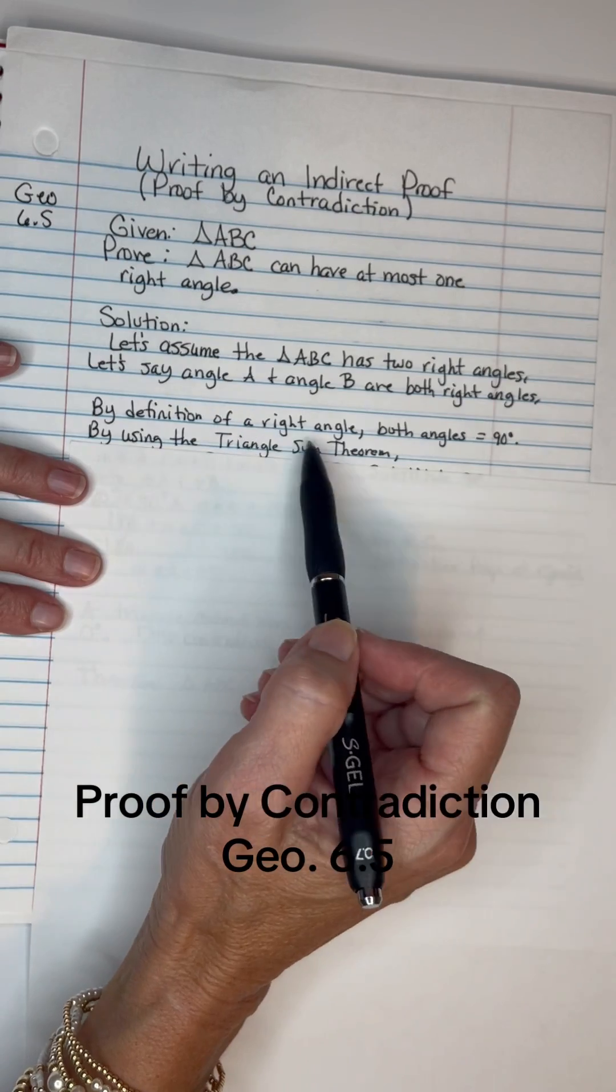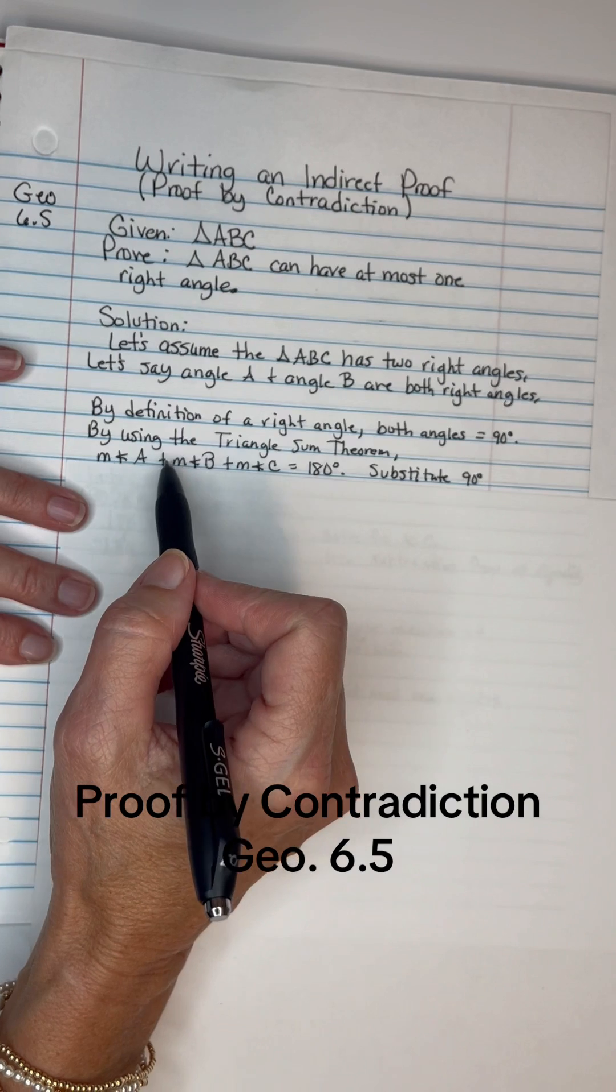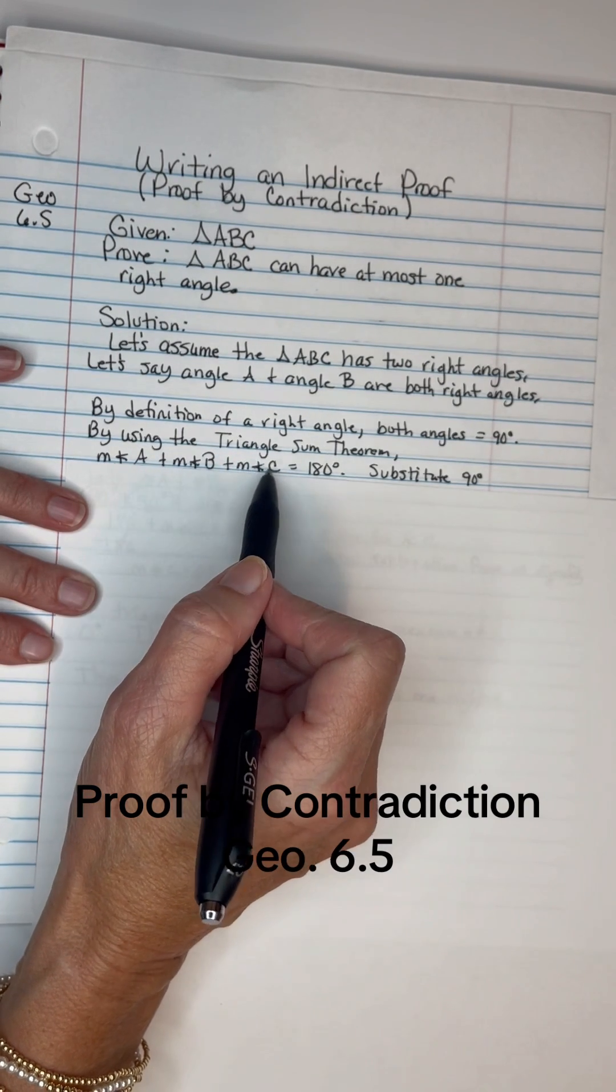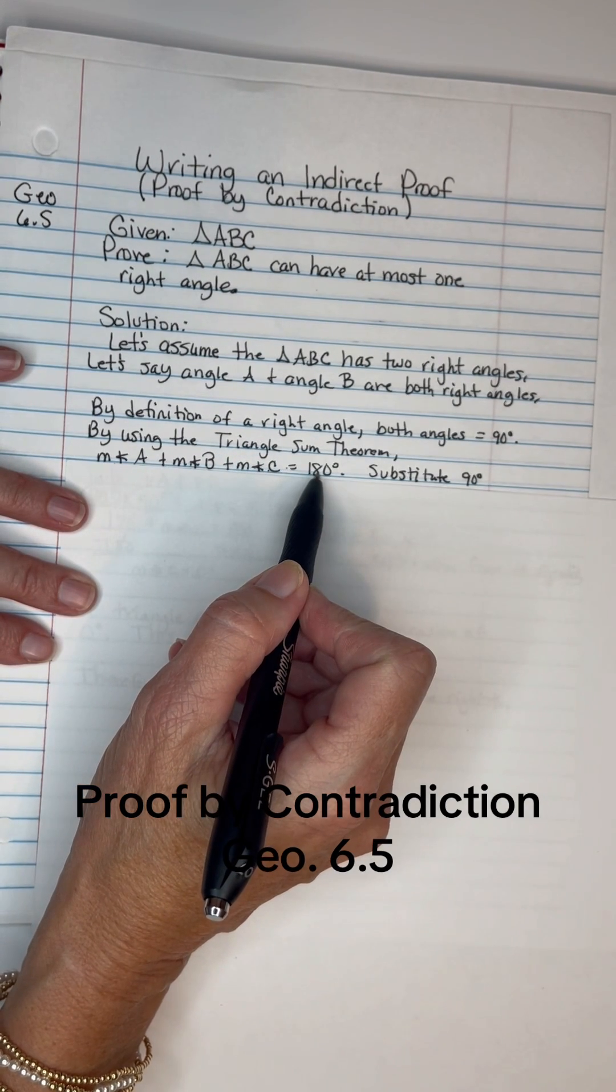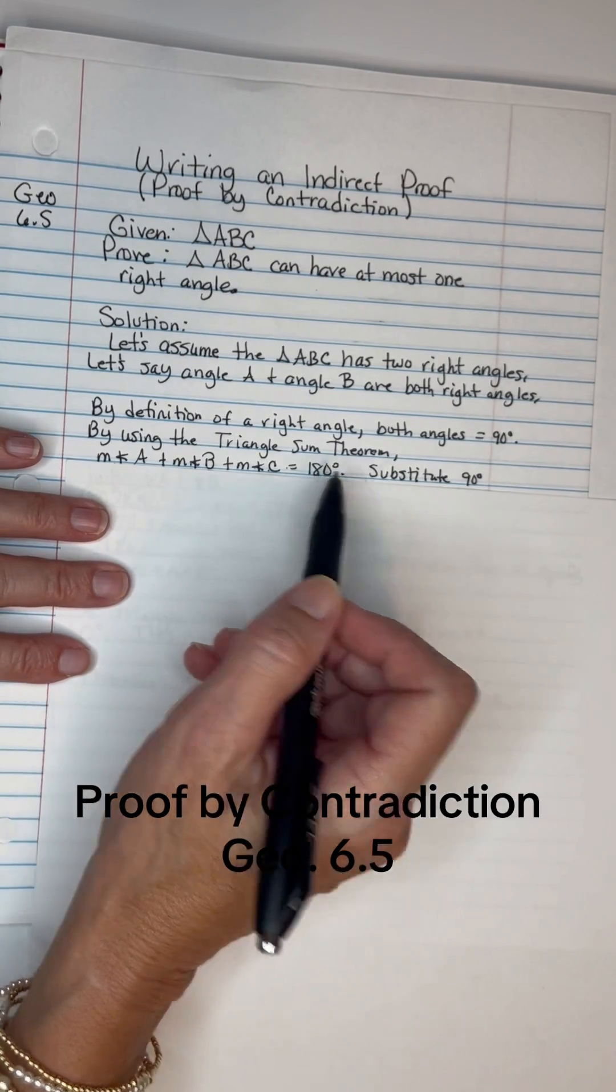Then think about the triangle sum theorem. The triangle sum theorem stated that angle A added to angle B added to angle C would equal 180 because all the degrees in interior angles of a triangle will always be 180.